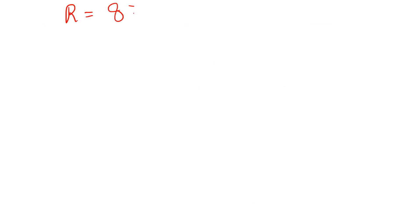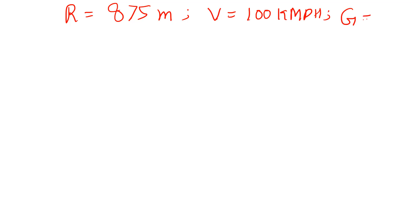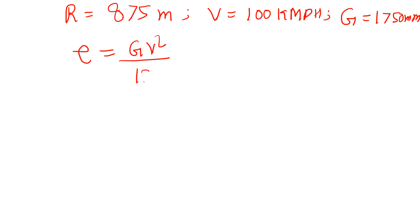First, let us see what data is given: radius of the curve is 875 meters, velocity is 100 kmph, and gauge distance is 1750 mm. Length of the curve is also given but is not required to solve this question. The super elevation formula is e = G·V² / (127·R).